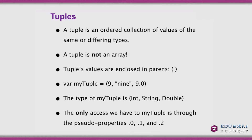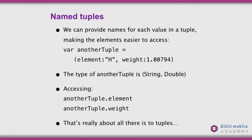One thing we can do is provide names for each value in a tuple, which makes elements easier to access. For example, anotherTuple = (element: "H", weight: 1.00794) — the type is (String, Double), but the names allow us to access it more clearly. anotherTuple.element gives us "H" and anotherTuple.weight gives us the atomic weight of hydrogen.